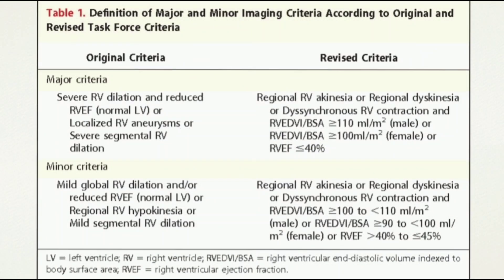Diagnosis of ARVD: There is a specified criteria to confirm the diagnosis of ARVD. The diagnostic criteria includes major and minor criteria. The major criteria includes severe RV dilatation, reduced RVEF, localized RV aneurysms, severe segmental RV dilatation, and regional RV akinesia or dyskinesia. In the revised criteria, RV end diastolic volume was also added as a parameter to increase the diagnostic value.